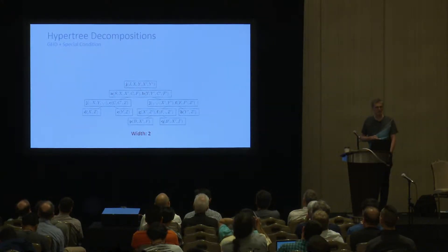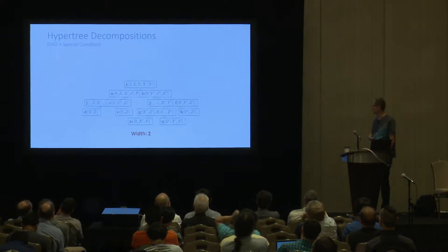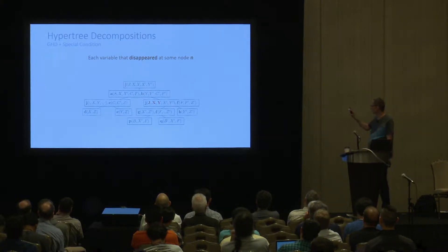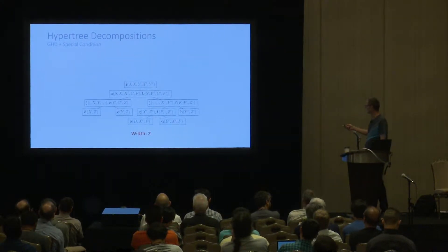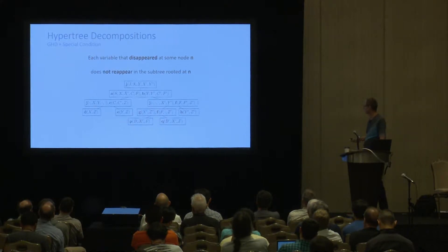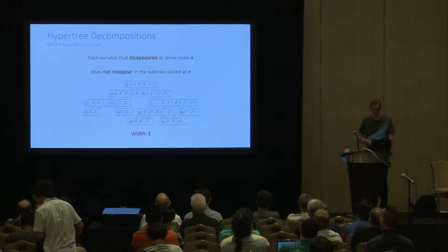The generalized hypertree width of the hypergraph is the minimum attainable width. Hypertree decompositions are yet another notion, and they are a special case of generalized hypertree decompositions where the so-called special condition is imposed: if at some node a variable disappears — contained in an edge but not in the covered bag — then this variable is not allowed to ever occur again below. This is a valid hypertree decomposition of width two.